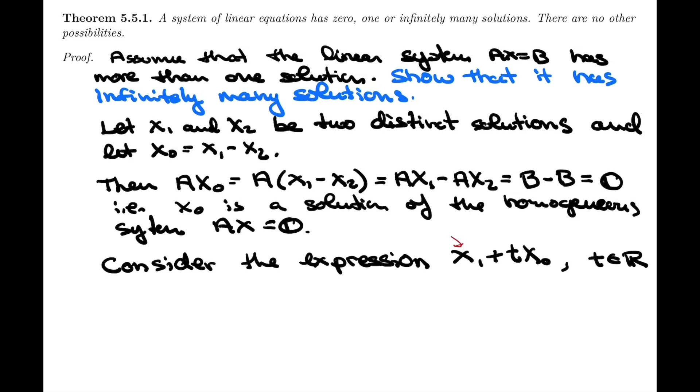And let me remind you that X1 is, it's a particular solution of AX equals B. So this is a solution of AX equals B, whereas X0, we showed above, that it's a solution of AX equals zero. So the homogeneous system, right? So by combining those with a scalar T that can be any real number, we've come up with an expression.